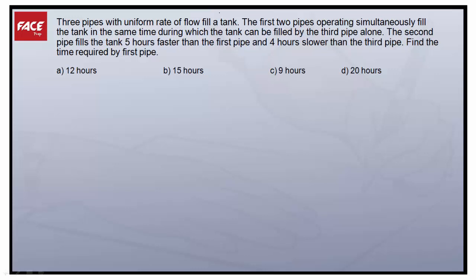Three pipes with uniform rate of flow fill a tank. The first two pipes operating simultaneously fill the tank in the same time during which the tank can be filled by the third pipe alone. So there are three pipes A, B, C — the time taken by A and B together equals the time taken by C alone.